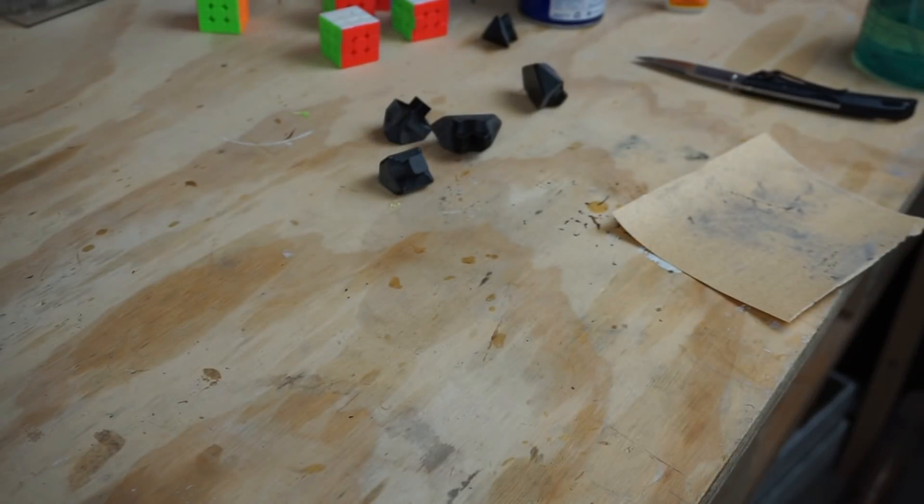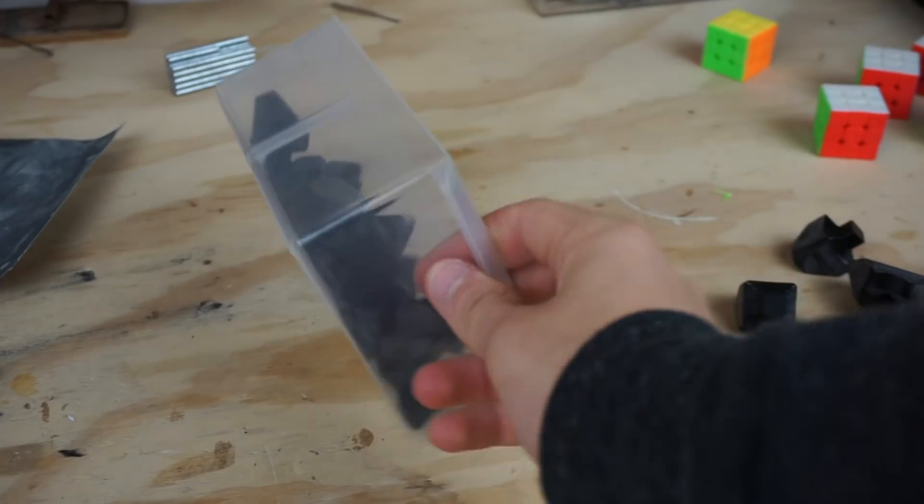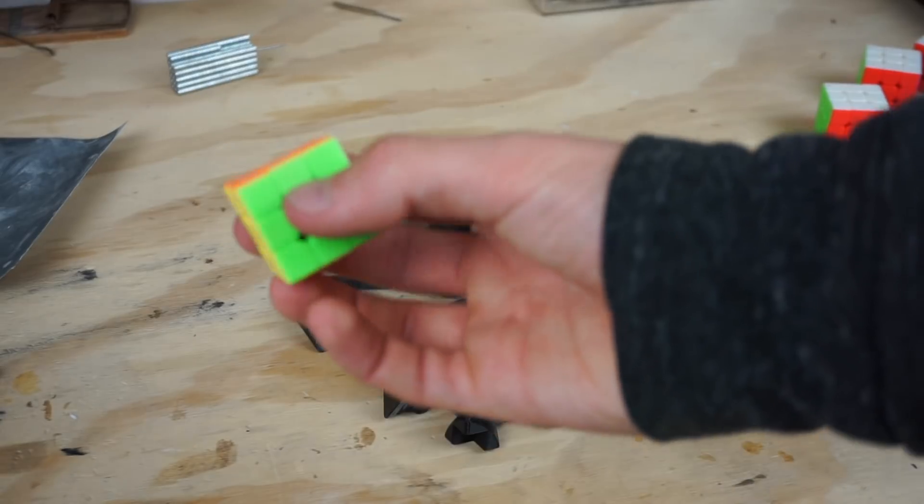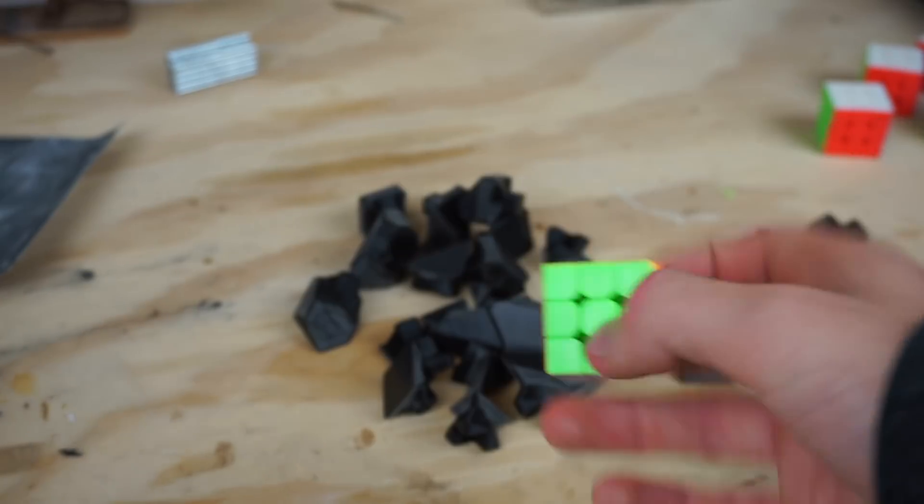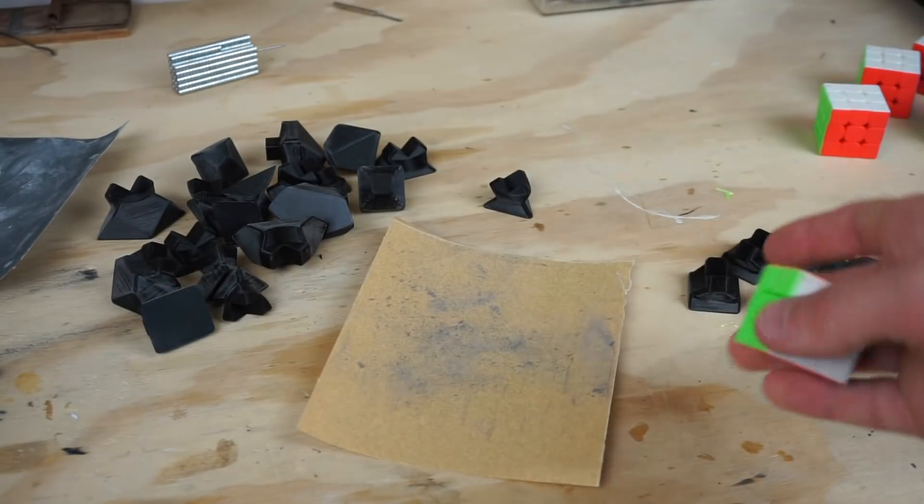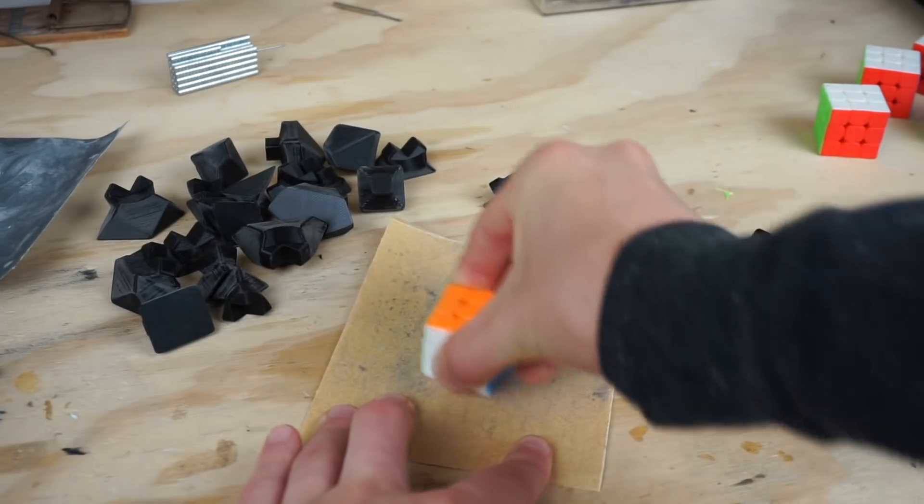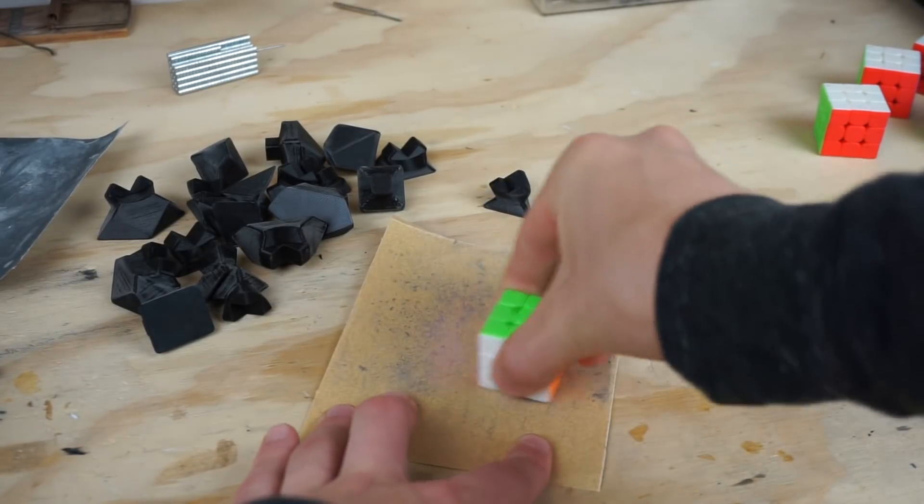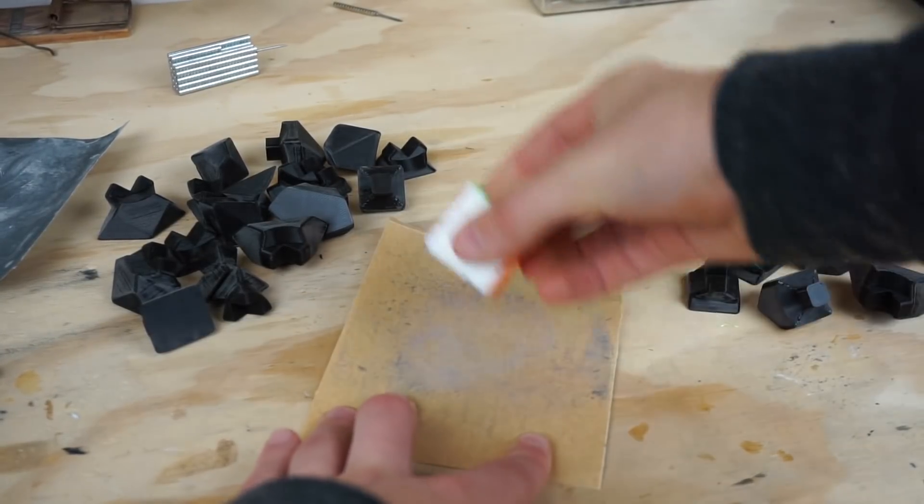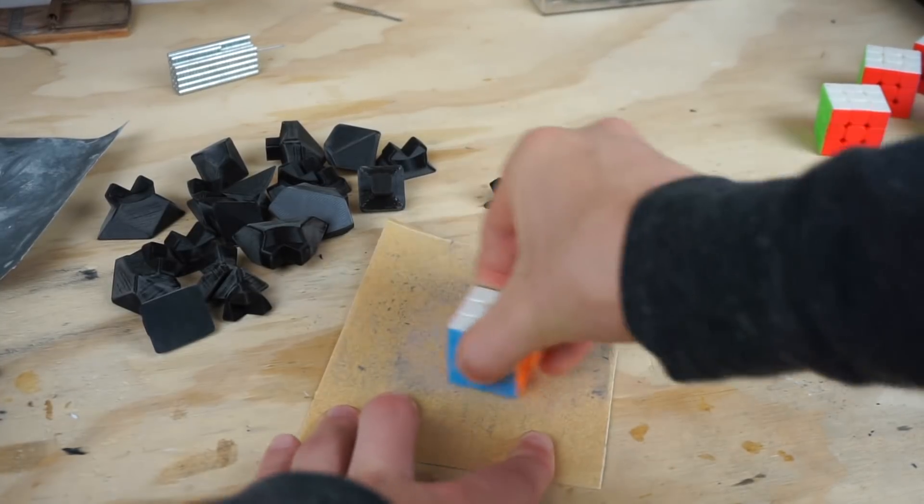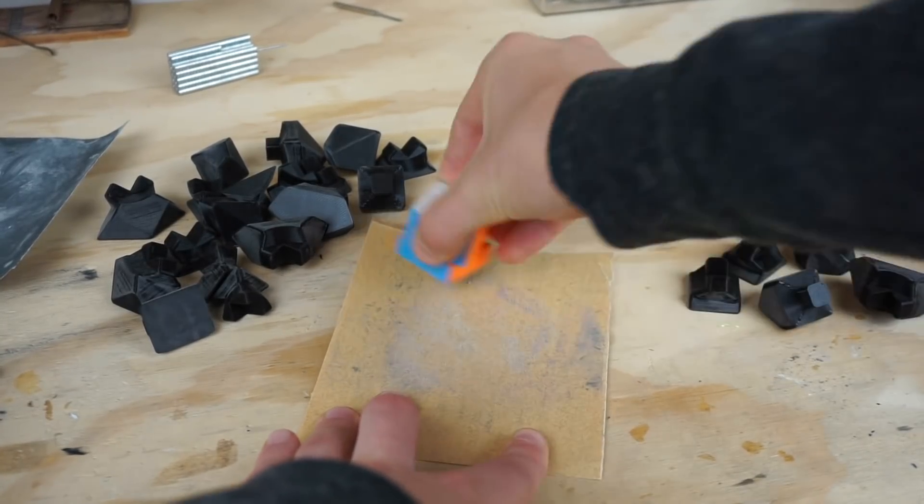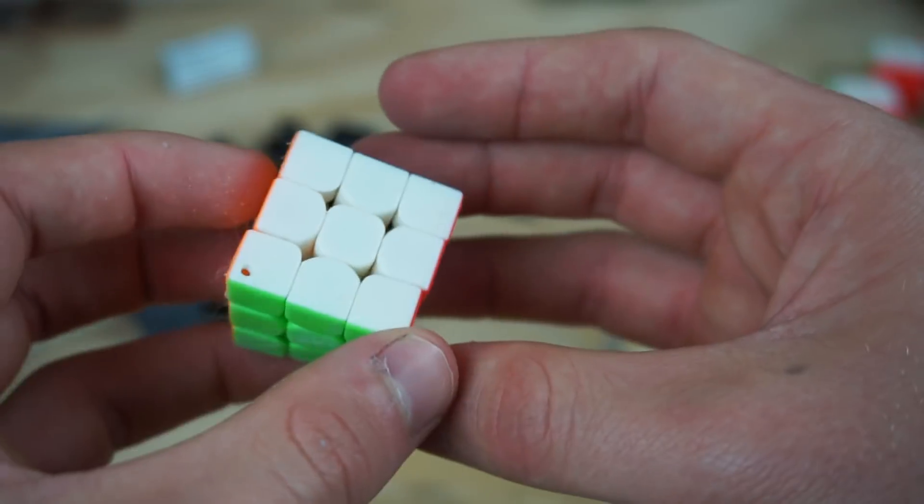After I did that, I took them and I power sanded them for the rest of the pieces. Then I took the 3x3 which I was using as the core and I sanded and roughened up all the different faces just so that the extensions would stick better to the cube.